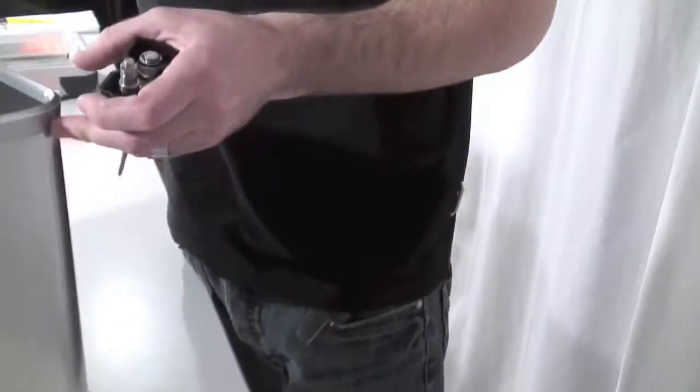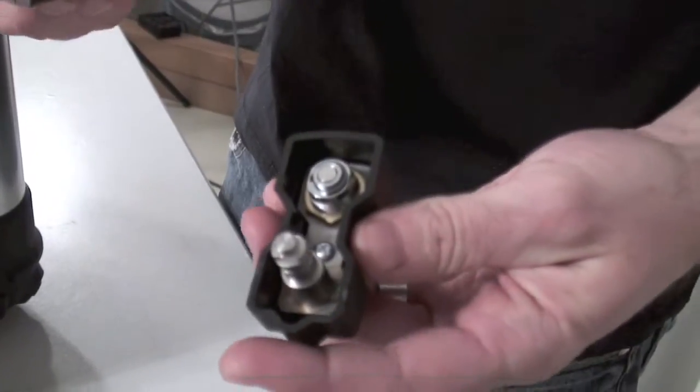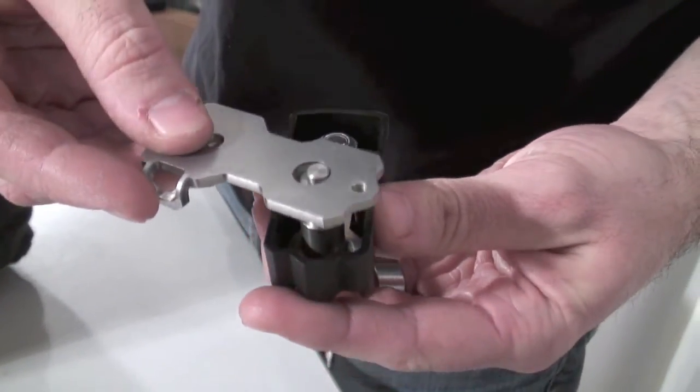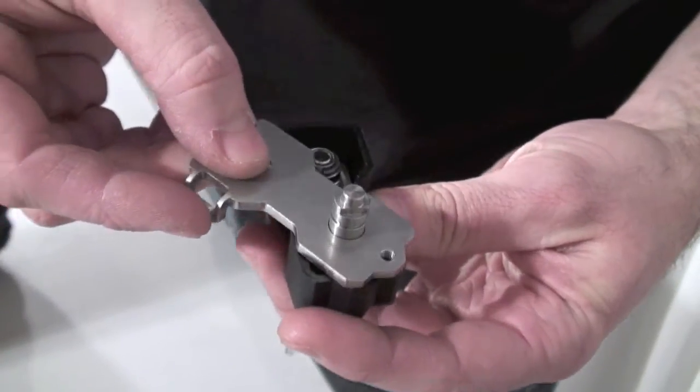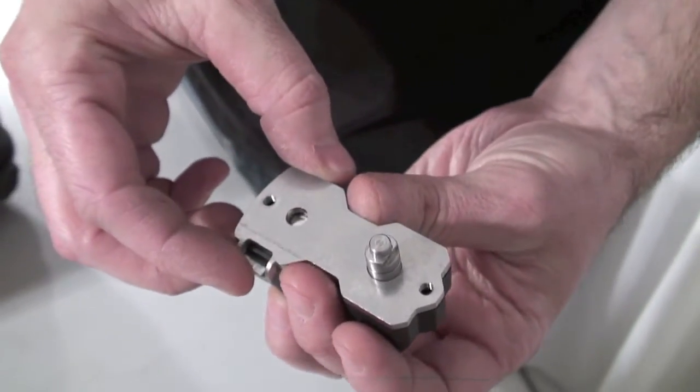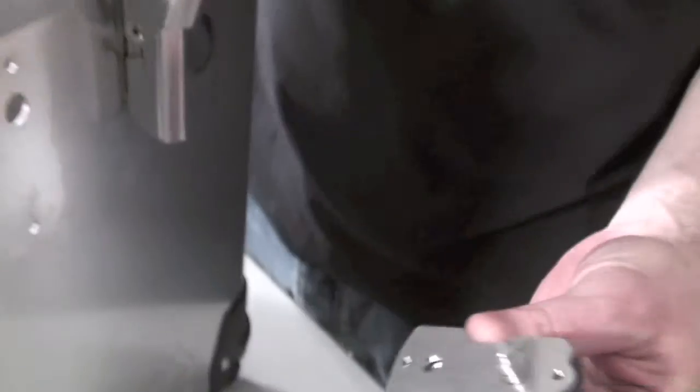Now we've fitted the lock cylinder we can get on with reinstalling the release lever. So we start by placing the metal plate back over the release lever axle, like this. And then we place the axle through the large hole in the pannier.